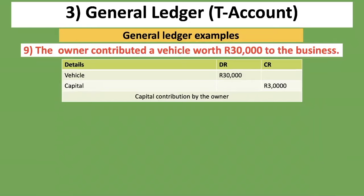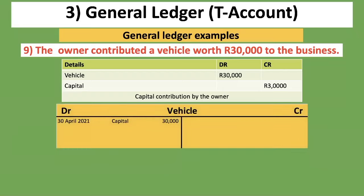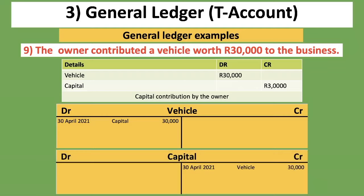Ninth transaction: the owner contributed a vehicle worth 30,000 rand to the business. The two accounts are vehicle and capital. The vehicle is an asset — debit side — and the detail is capital, with 30,000 rand. For capital, it's on the credit side and the detail is vehicle, showing the capital contribution was a vehicle rather than cash. Amount is 30,000 rand.